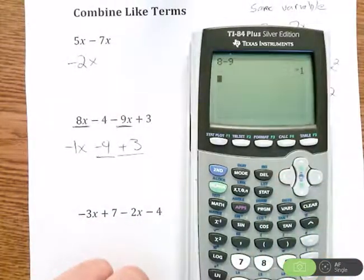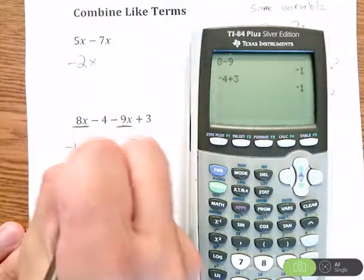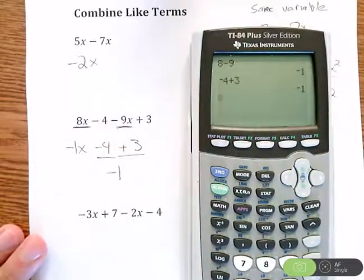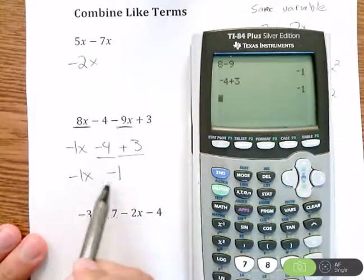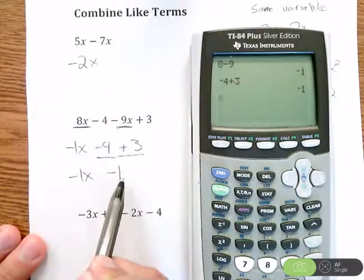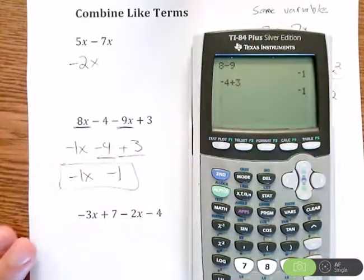Now let's continue - is there anything else I can combine? Well sure, I have a minus 4 plus 3. So slow and steady, we're going to do minus 4 plus 3, and that's negative 1. So those combine down to negative 1. I still have that negative 1x I didn't touch there.